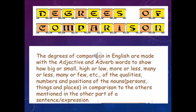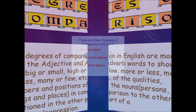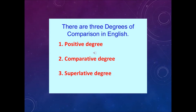The degrees of comparison in English are made with adjectives and adverbs to show how big or small, high or low, more or less, many of the qualities, numbers and positions of the nouns in comparison to the others mentioned in the other part of a sentence. There are three degrees of comparison in English: positive degree, comparative degree and superlative degree.